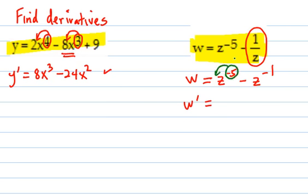You bring it down in the front. You get negative 5z. Decrease the exponent by 1, so subtract 1. That's negative 6.